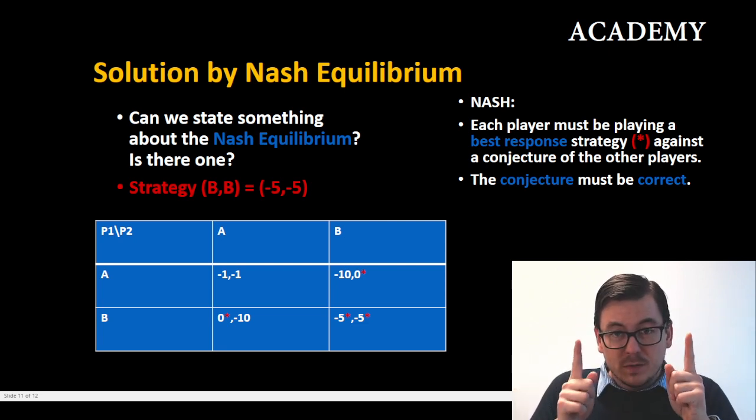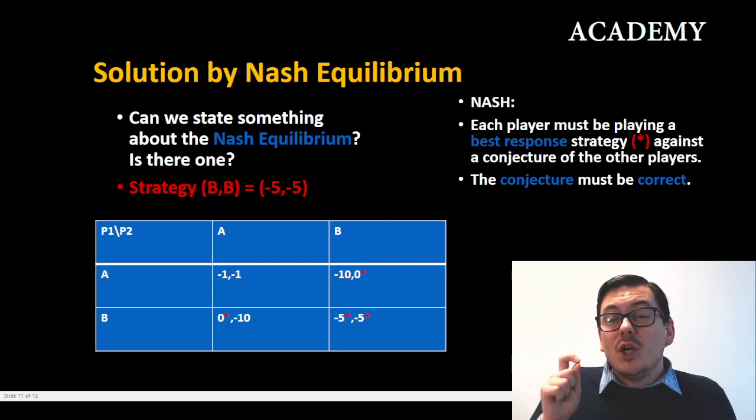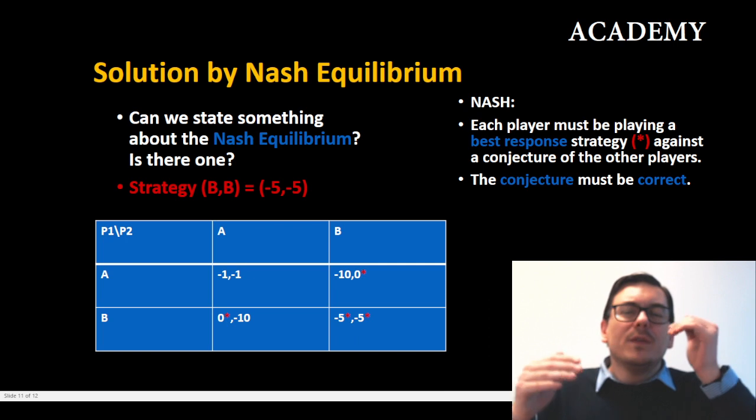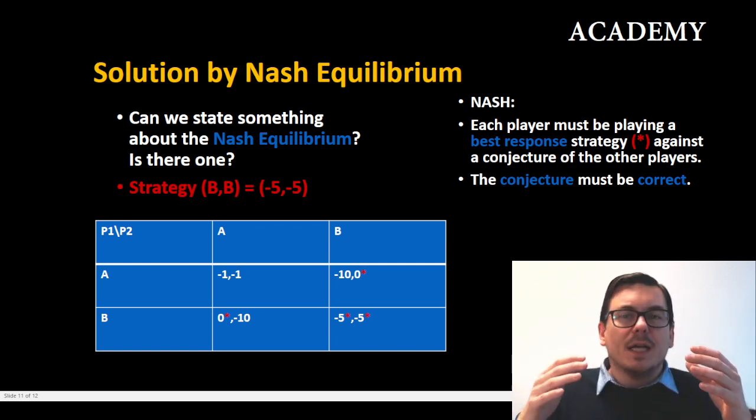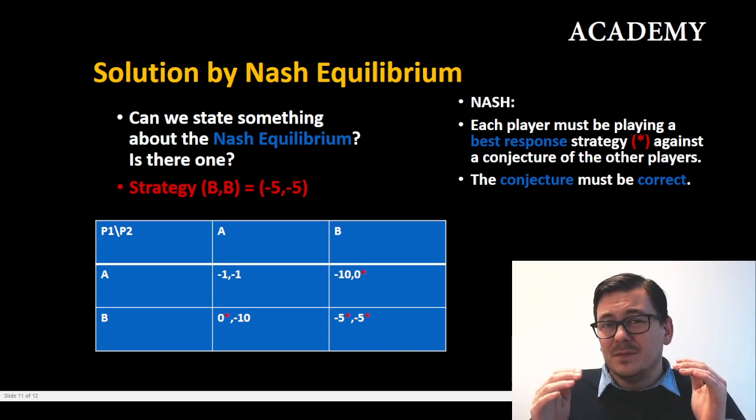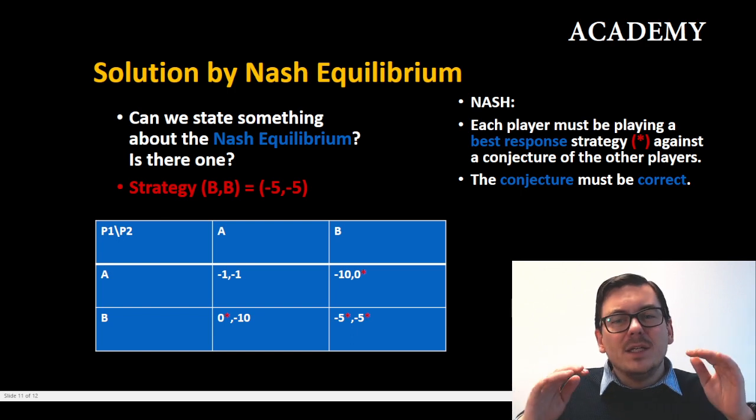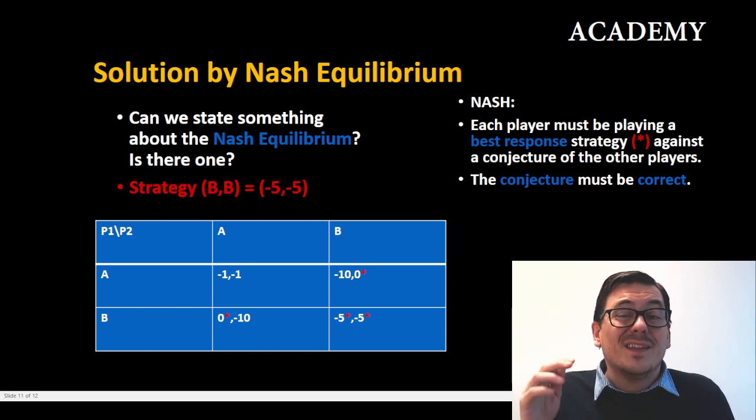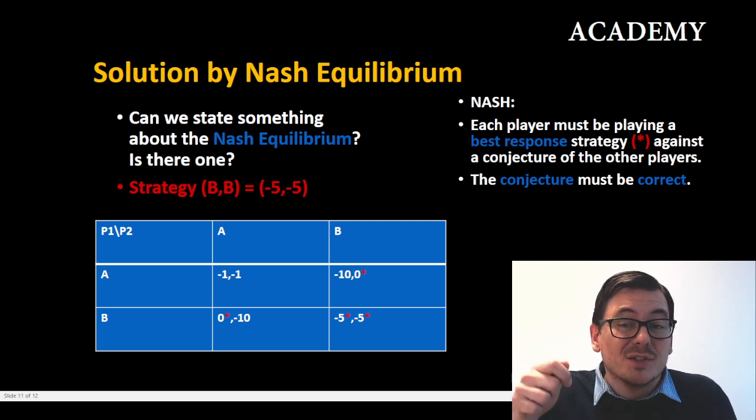So when we have two times best response and no one has an incentive to move, that is when we can say that there is a Nash equilibrium. And the reason why you always have to double check, like does anyone have an incentive to move, is because then you answer the question of is the conjecture correct.